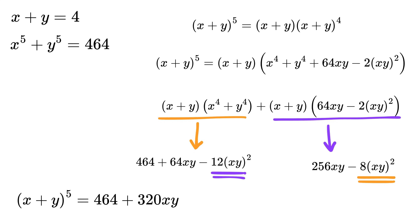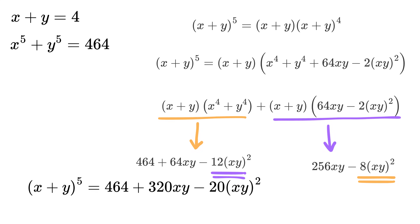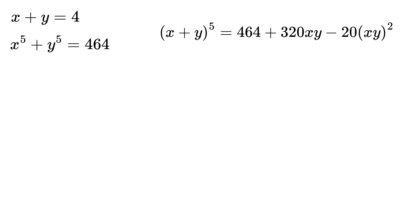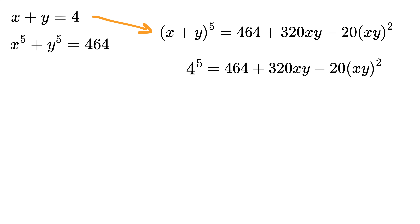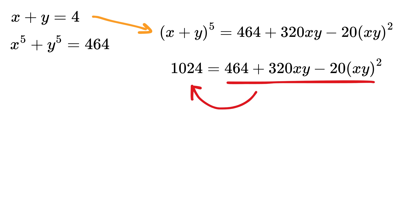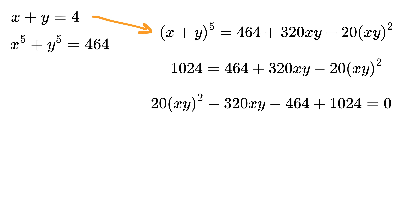Adding both parts together: 464 plus 64xy minus 12(xy)² plus 256xy minus 8(xy)² equals (x+y)⁵. Combining terms gives 464 plus 320xy minus 20(xy)². Substituting (x+y)⁵ equals 4⁵ equals 1024, and rearranging everything to one side, we get 20(xy)² minus 320xy plus 560 equals 0.